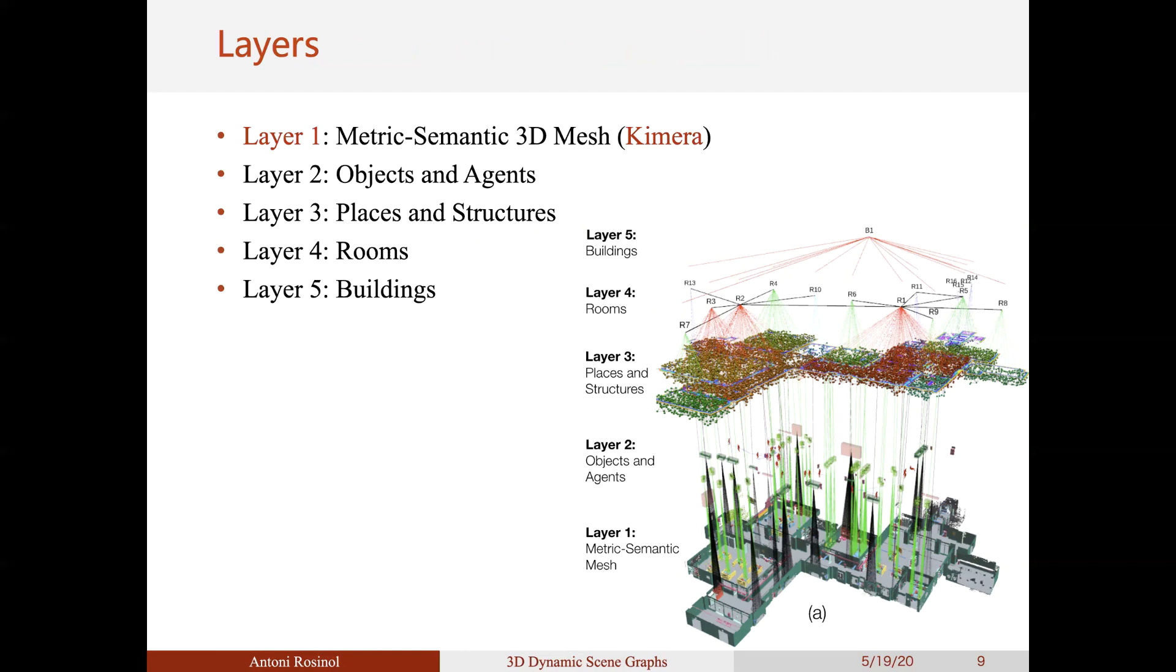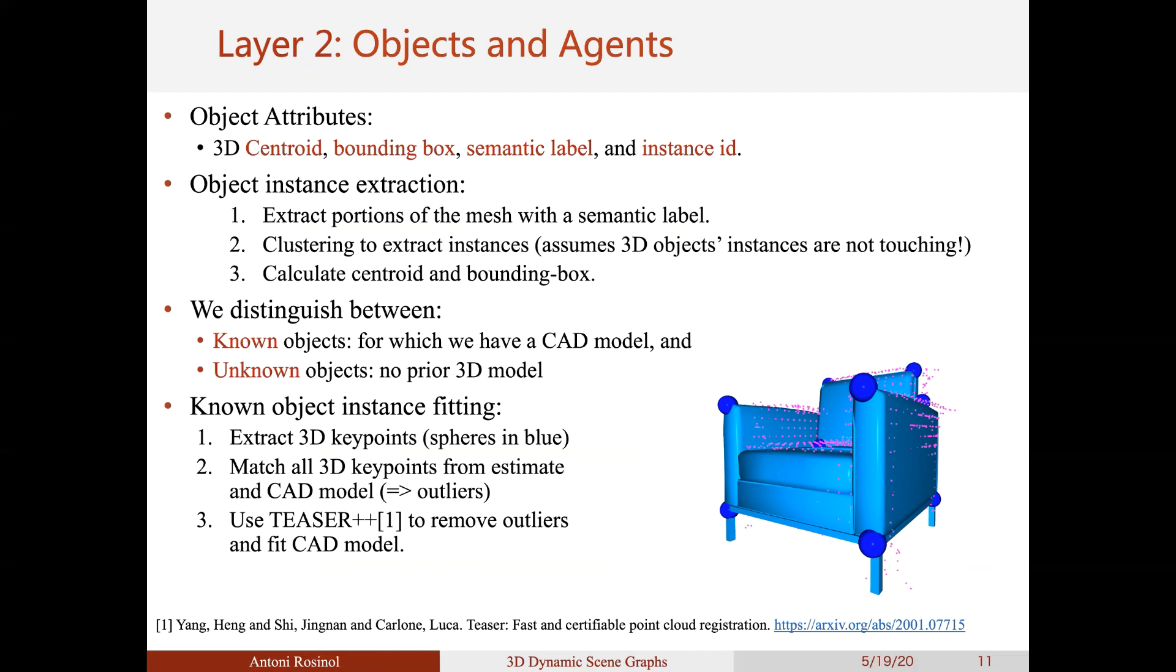Let us look into how we represent objects and dynamic agents in the scene, which corresponds to layer 2. In layer 2, we model objects by the 3D centroid, a bounding box, its semantic label, and its instance ID. To extract objects from the semantically labeled 3D mesh, we first extract all 3D meshes that have an even semantic label, such as a chair. Then, using a clean and clustering over the 3D meshes, we segment the objects into multiple instances. Once we have the instances, we can then compute its centroid and its bounding box.